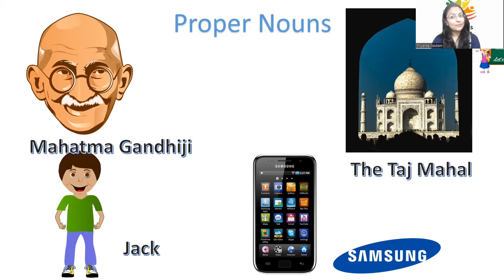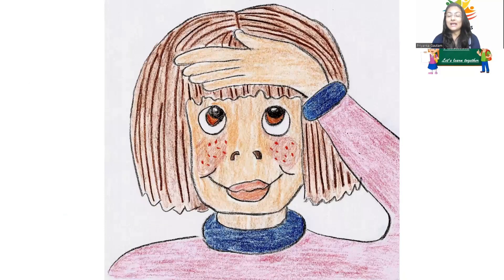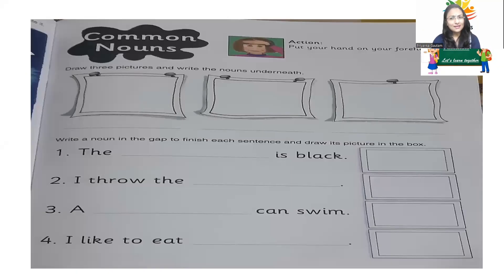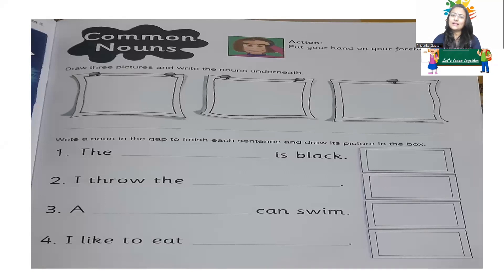The action for the common noun is four fingers on your forehead. Now, regarding color — there are many types of nouns, but today we are discussing proper and common nouns. The noun color in Jolly Grammar is black. One activity is to fill in the blank with a noun: 'The blank is black' — you can say the board is black, the table is black, the chair is black.